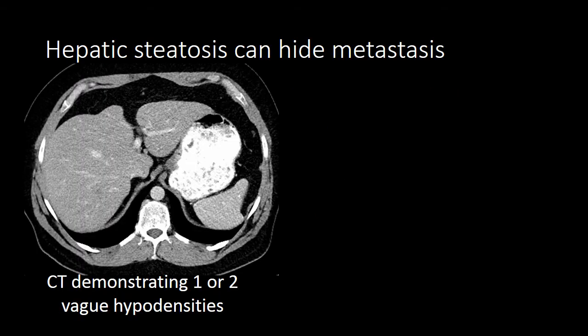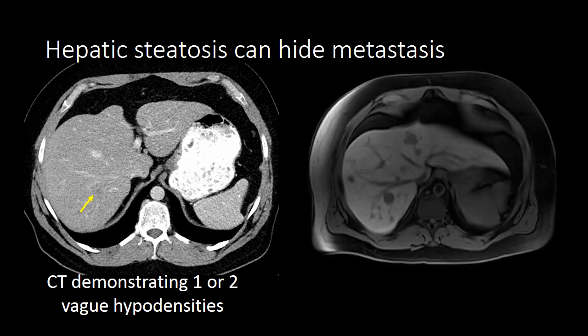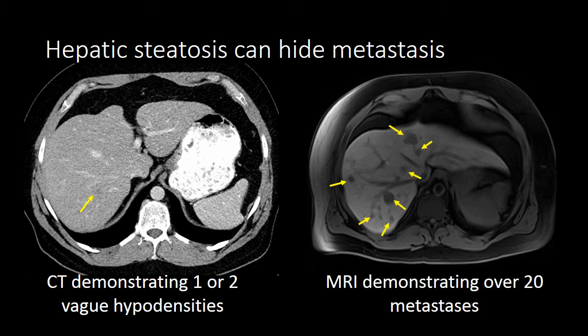If CT is used to screen for metastatic disease, it is important to identify the presence or absence of hepatic steatosis, because hypovascular metastases may be difficult to identify in a background of hepatic steatosis. In this example, the CT only demonstrated one or two vague hypodensities. An MRI was recommended for additional characterization, and the MRI demonstrated greater than 20 metastatic lesions throughout the liver.